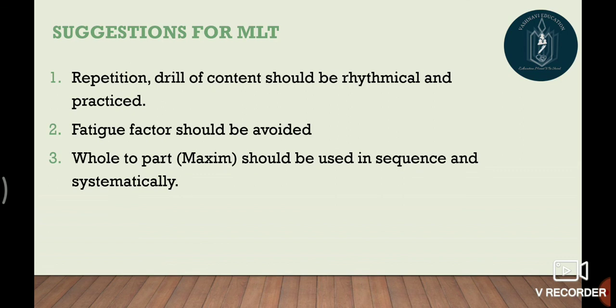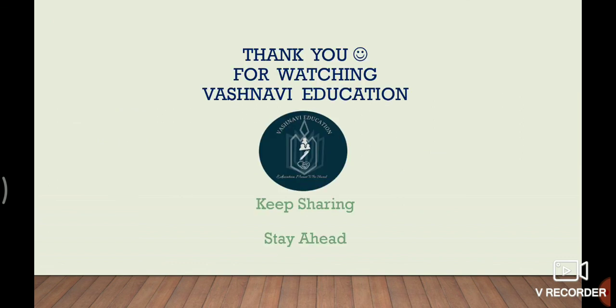First show the whole image, then explain its parts one by one. For example, in the Maxim of Whole to Part, whenever we see a tree, we first see the whole tree, then our attention goes to its branches, its leaves, then its stem, and then we understand that there must be some roots through which it stands. In Memory Level of Teaching, the suggestion is that it should go from whole to part, and there should be a proper sequence and system — step by step, covering content in order.